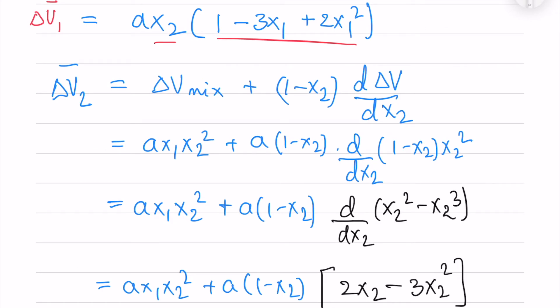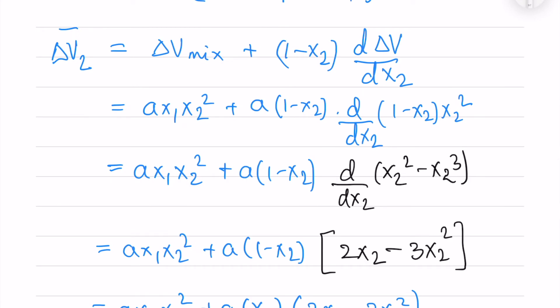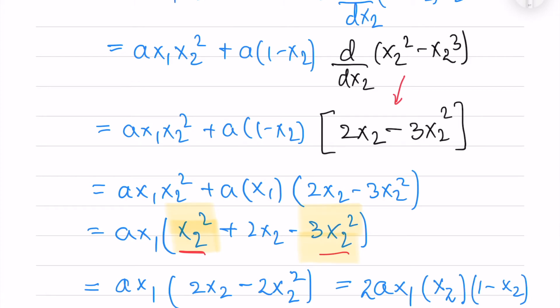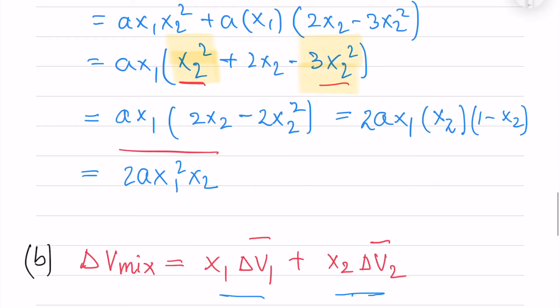For the second component I do the same procedure. I write the equation, differentiate with respect to x2, writing x1² as (1 minus x2)² and expanding. After differentiation I take the components out: a·x1 times the bracket gives terms like x2² plus 2x2 minus 3x2². Two terms cancel and I take 2 and x2 common, giving a factor of (1 minus x2). Finally I obtain the expression for delta v2 bar.